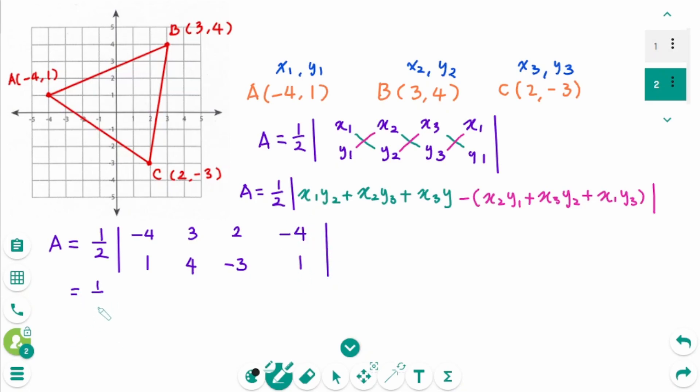Equals one-half, the absolute value sign, times diagonally: -4 times 4, plus 3 times -3, plus 2 times 1, minus the other way: 3 times 1, plus 2 times 4, plus the last one, -4 times -3, then cross.